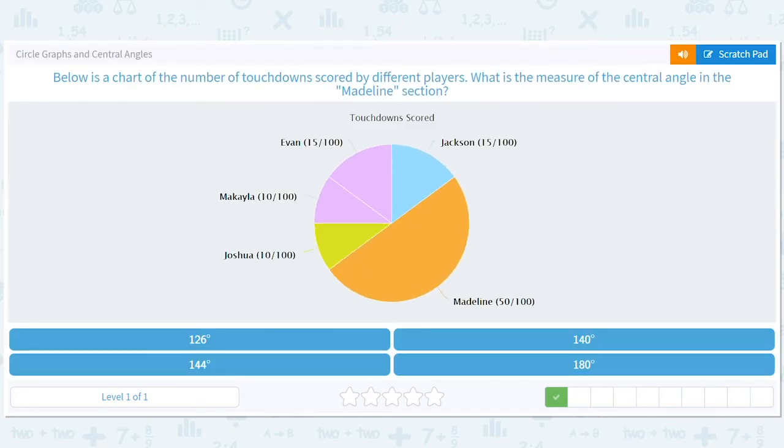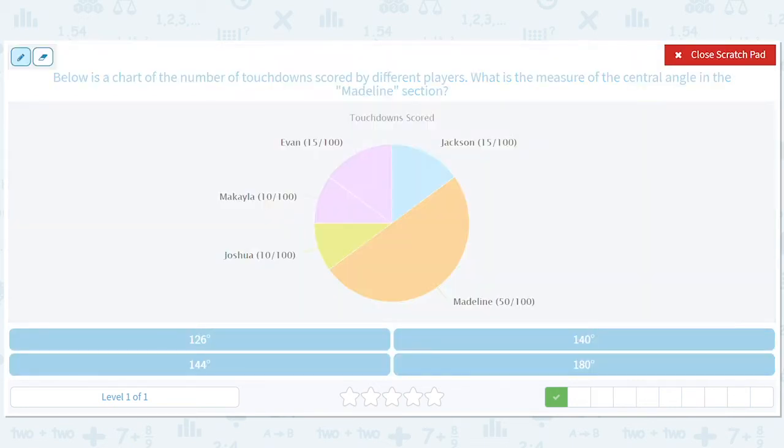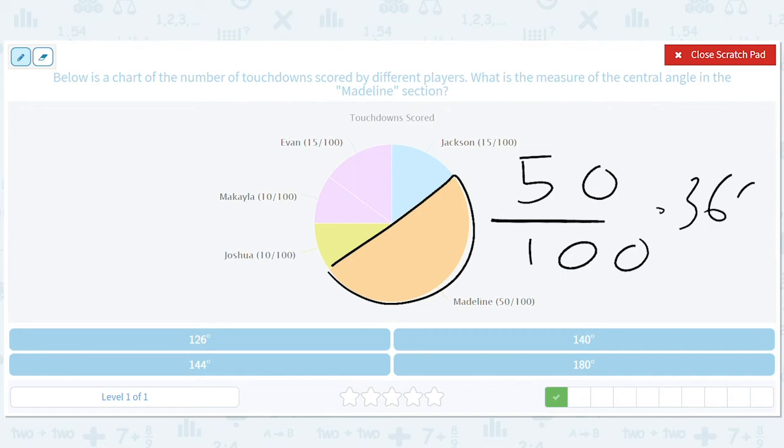All right, hopefully we get some simpler numbers. But hey, we're ready for it if we don't. The Madeline section. Oh guys, this is very good news. The Madeline section is 50 out of 100. That's a half. We're just taking a half of 360. You should memorize what a half of 360 is. It's 180.